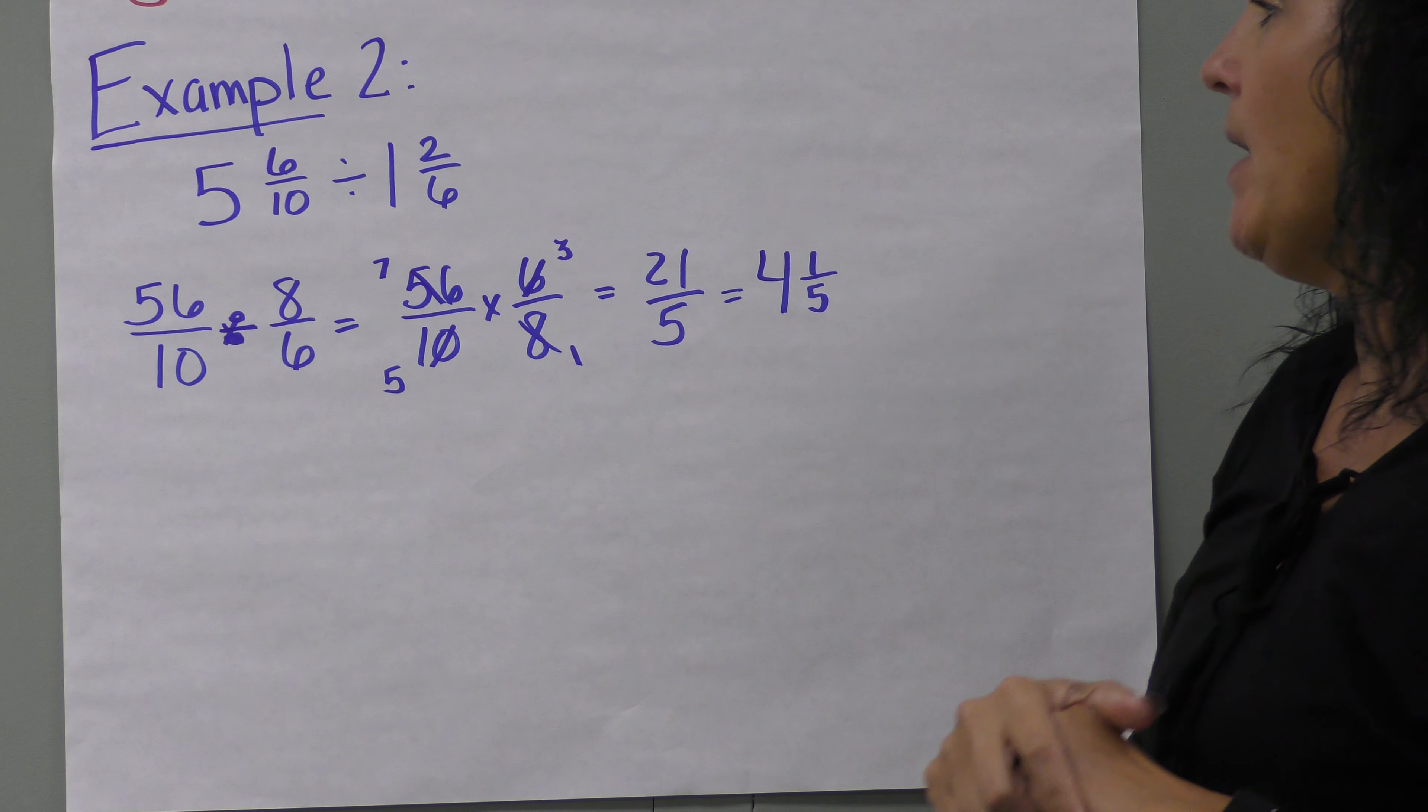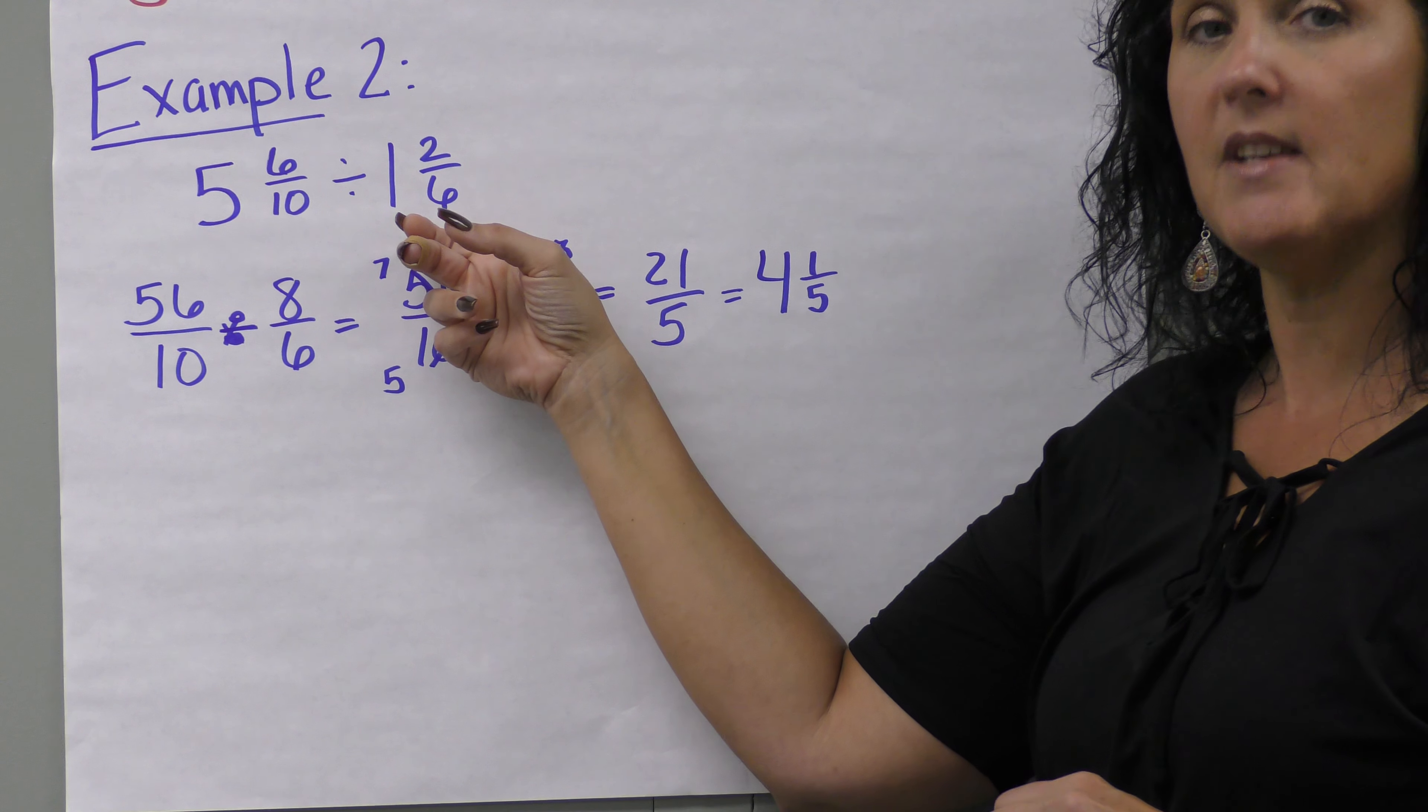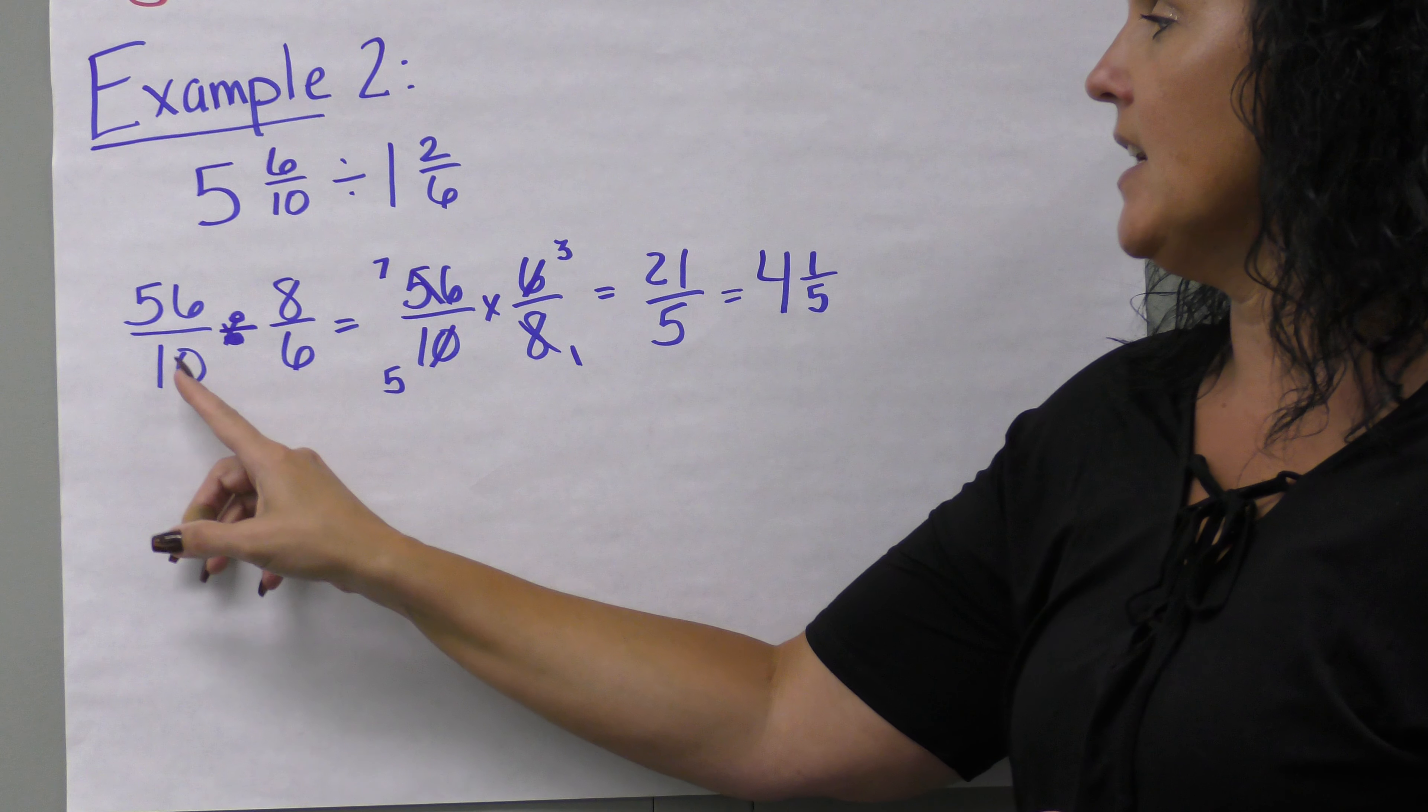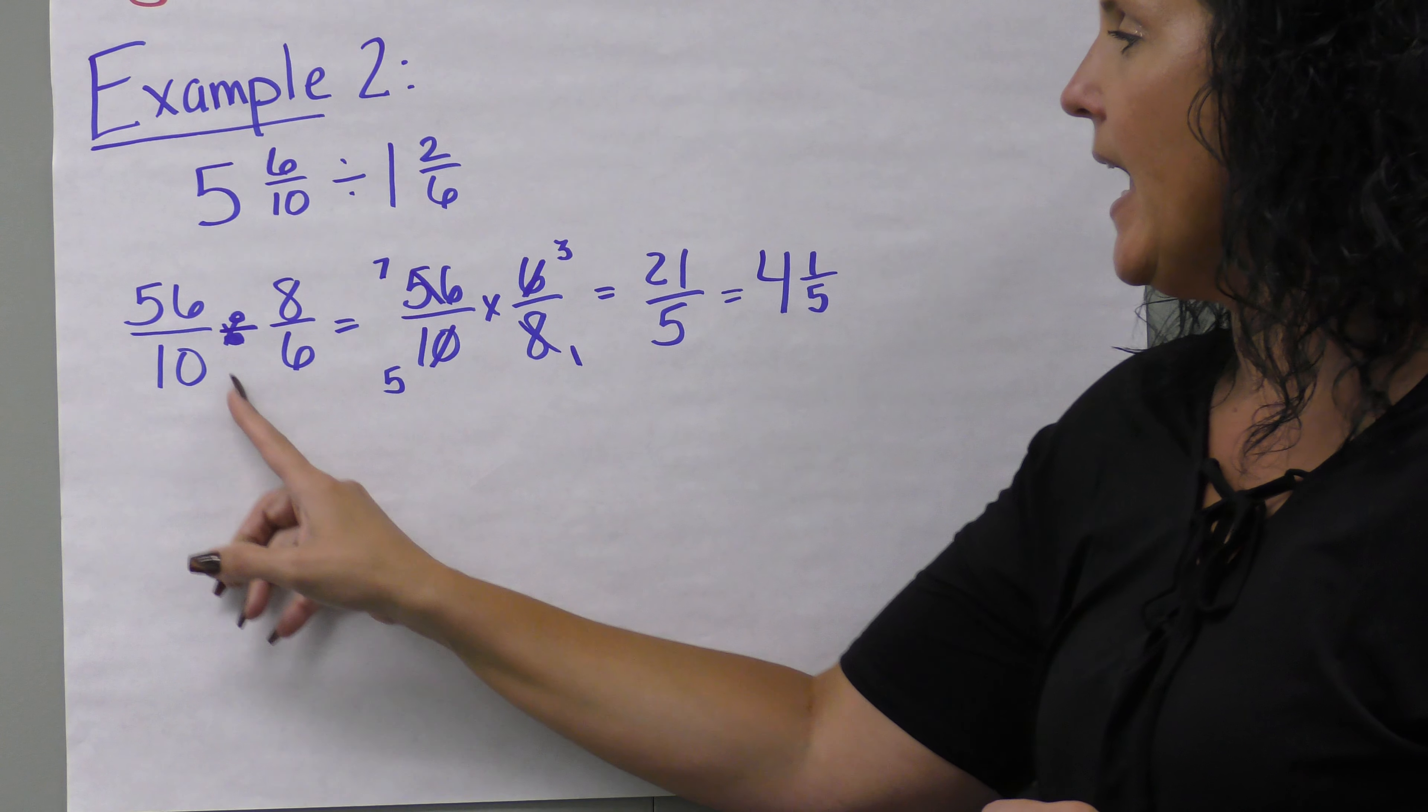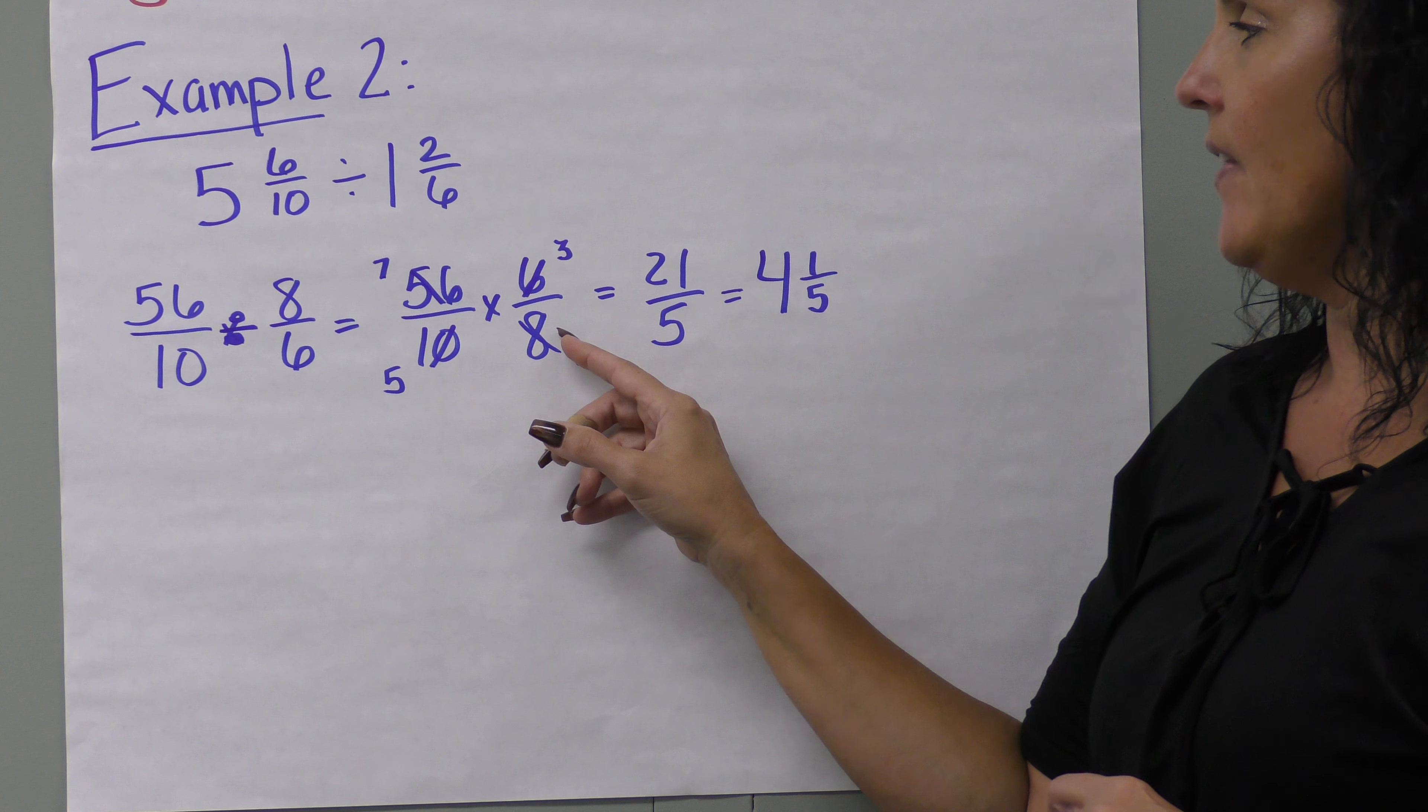One more example: five and six-tenths divided by one and two-sixths. Five times ten is fifty, plus six is fifty-six over ten. One times six is six, plus two is eight, so eight over six. We're dividing fifty-six tenths by eight-sixths. Flip the second one: fifty-six tenths times six-eighths.